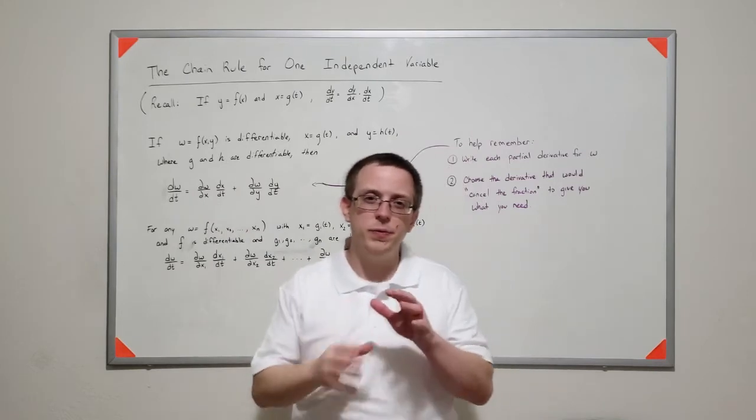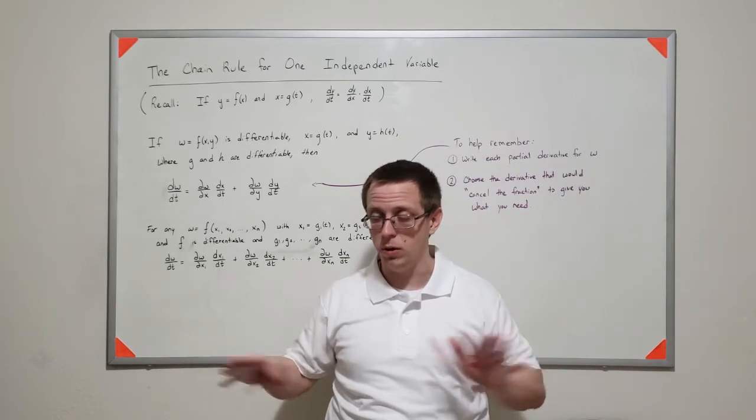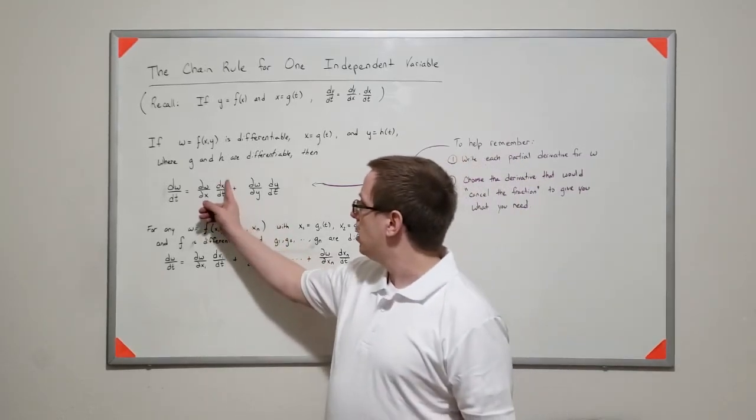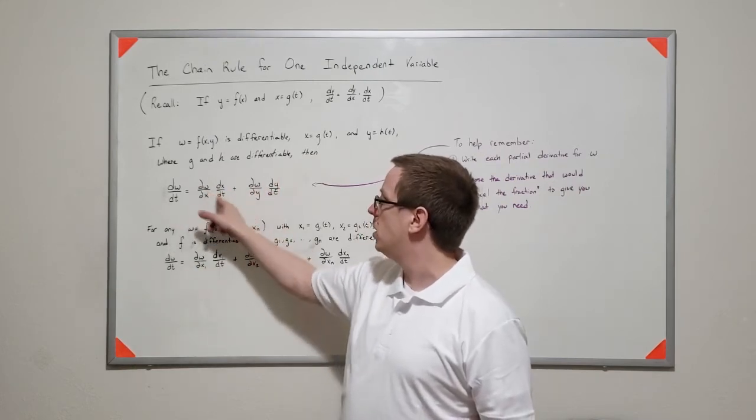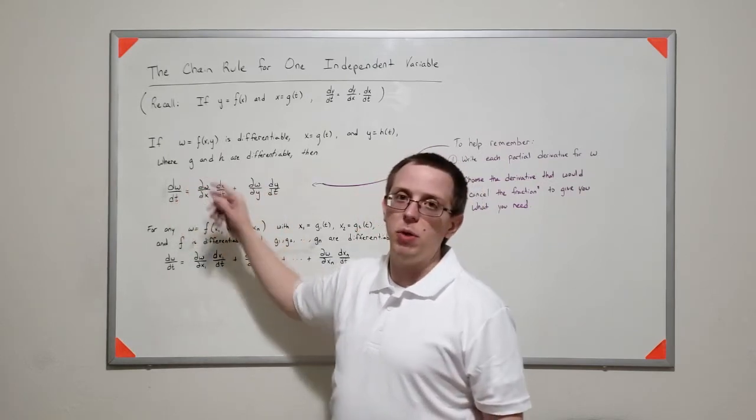And then, sort of the shorthand way, if you think of these like fractions, they're not fractions at all, they're not. But if you think of them like fractions, notice how the dx's would cancel and the dy's would cancel, and you'd end up with like a dw dt in both cases.